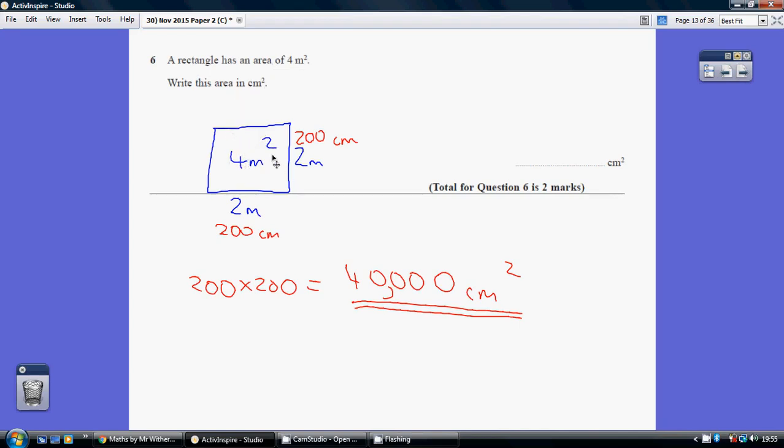So how can we get 4 metres squared? Now they tell us it's a rectangle but area is area so let's just make it a square. So 4 metres squared would be 2 metres by 2 metres. 2 times 2 is your 4 metres squared.